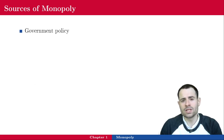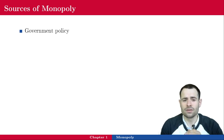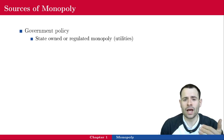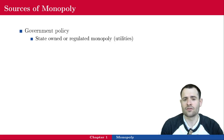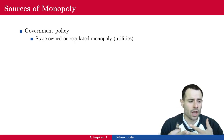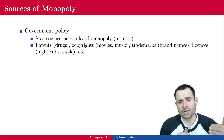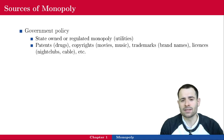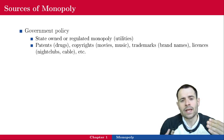Where do monopolies come from — how does a firm end up being a monopolist? First, it can be due to government policy. The government could allow a firm to operate as a monopolist for different reasons, and sometimes the government can own the monopoly or regulate it, especially for utilities like gas, electricity, and water. Sometimes the government allows a firm to operate as a monopolist because it purchases a patent — the right to be the exclusive producer of a good for a certain amount of time.